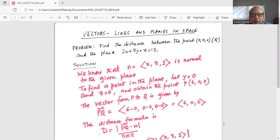Solution. We know that the vector n with directional numbers 2, 3, and 1 is normal to the given plane.